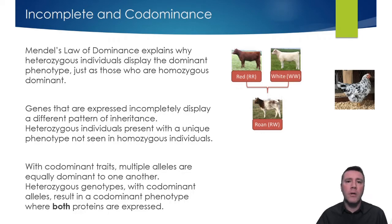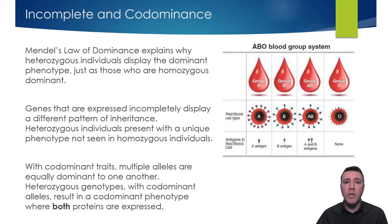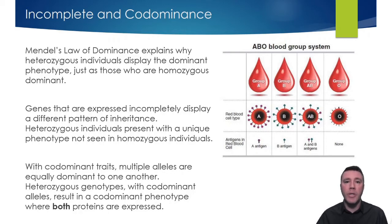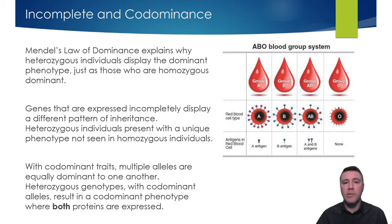A classic example of codominance in humans is the ABO blood group system. The A and B alleles are completely dominant over the O allele, but are equally dominant to each other. A person heterozygous for blood type AB would present both A and B proteins on their red blood cells.